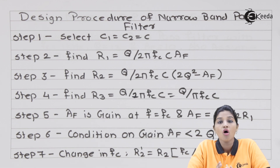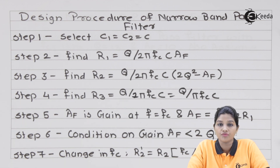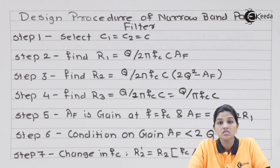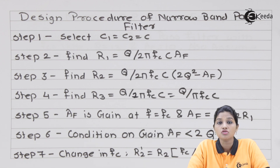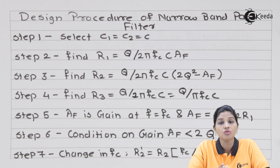A narrow band pass filter, as its name indicates, allows only a very narrow or small band of frequency to pass. Therefore we get a very sharp frequency response. In circuits where we require very precise frequency selection, we use a narrow band pass filter, because as the value of Q increases, the bandwidth is reduced and the frequency response becomes sharper. The circuit of a narrow band pass filter consists of only one op-amp connected in inverting configuration, unlike other filters which use non-inverting configuration.